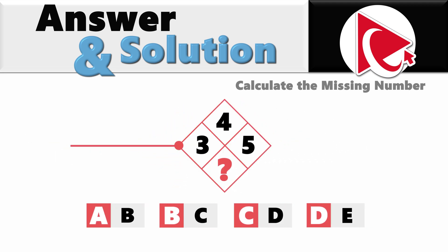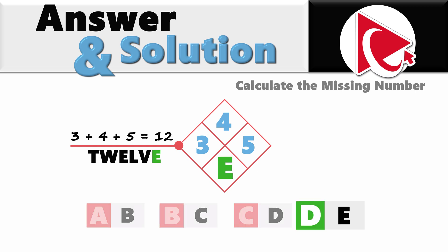In the third diamond the digits are 3, 4 and 5. 3 plus 4 plus 5 is 12. And the last letter in the word 12 is E. So the correct answer here is choice D, E.